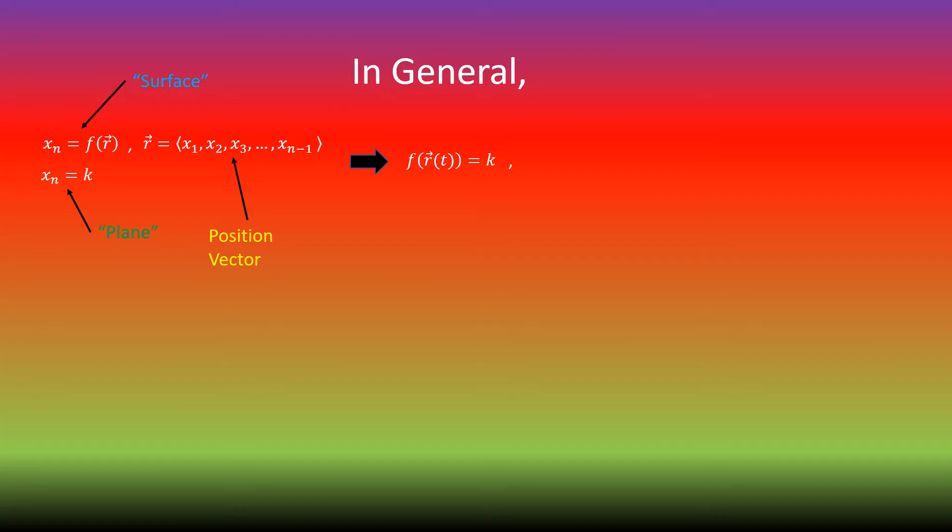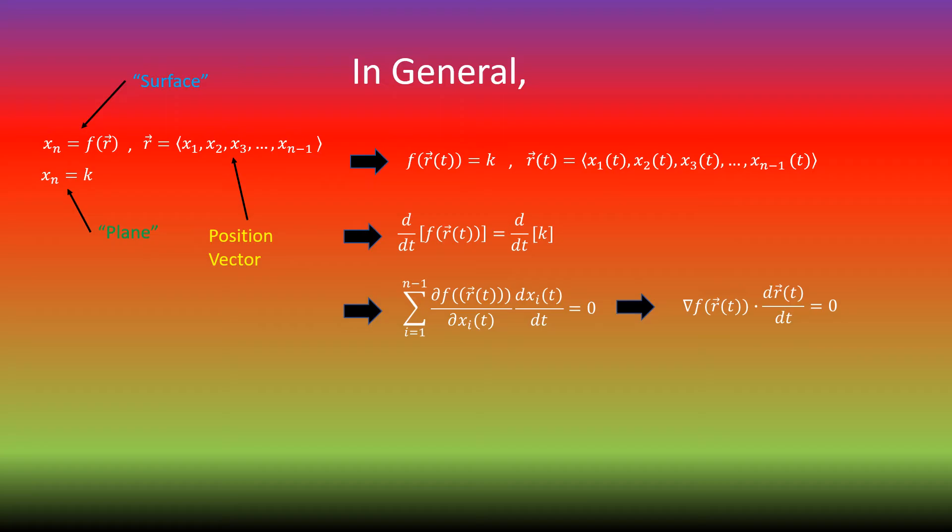If this is true, then we can take the derivative with respect to t of both sides. On the left side, we can expand the function using the multivariable chain rule, and on the right side, the derivative of a constant is just 0. And so we can say that the dot product of the gradient of f of r of t with the derivative with respect to t of r of t is equal to 0, meaning that for the level curve, the gradient is orthogonal to the curve.